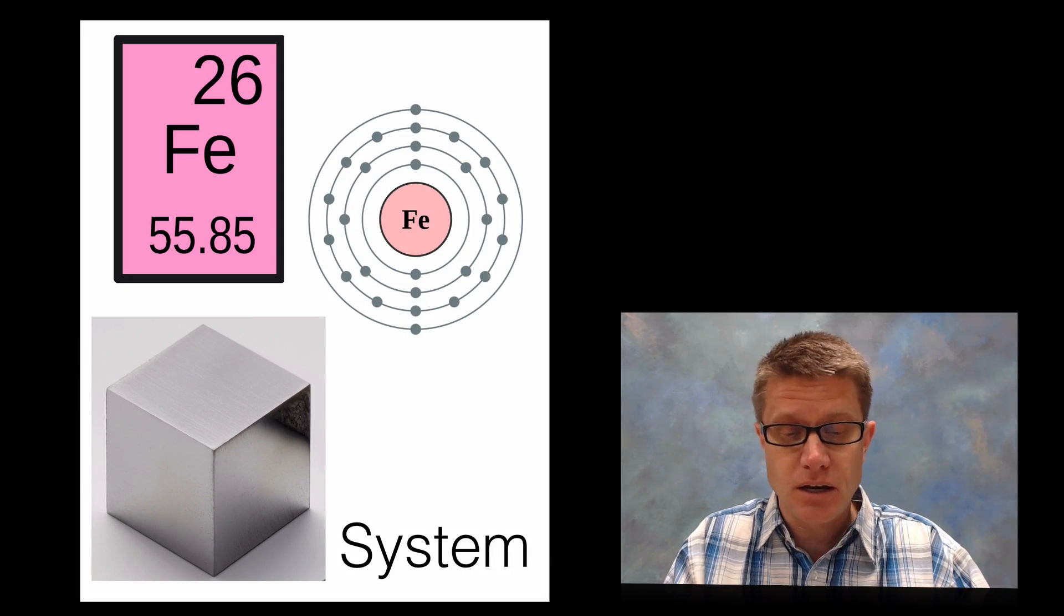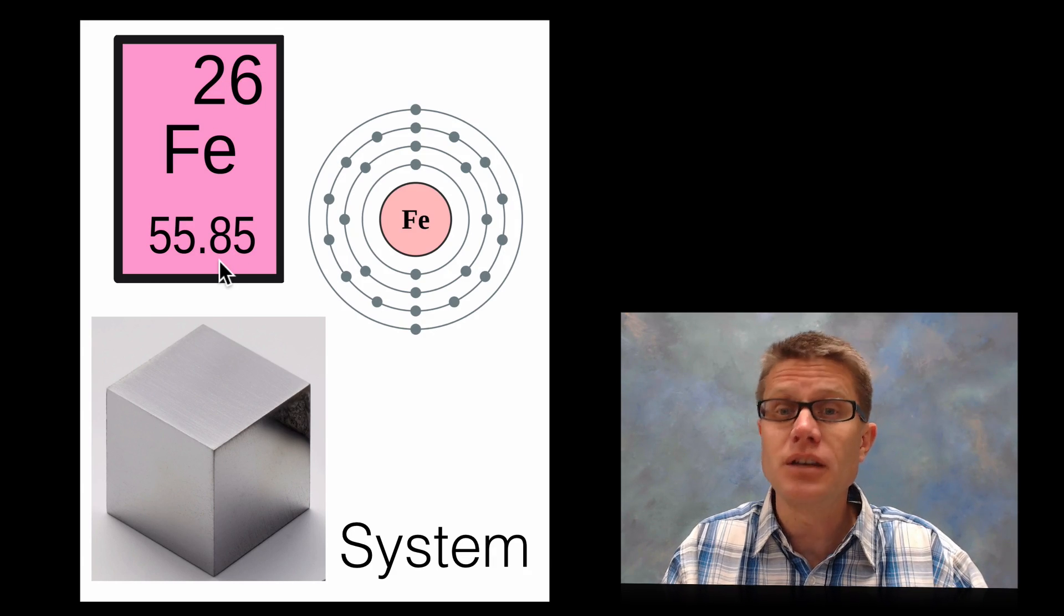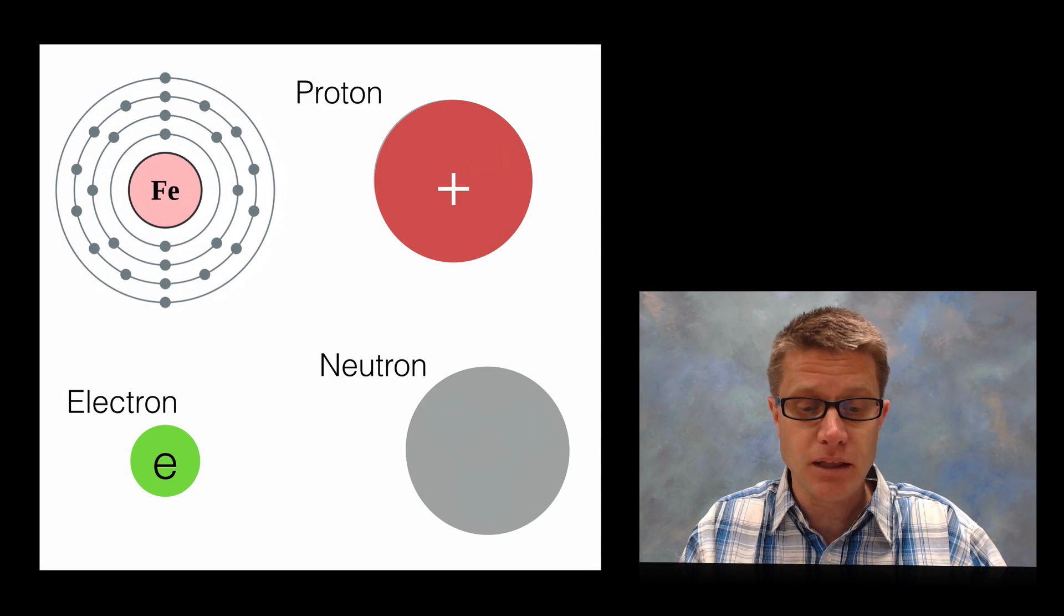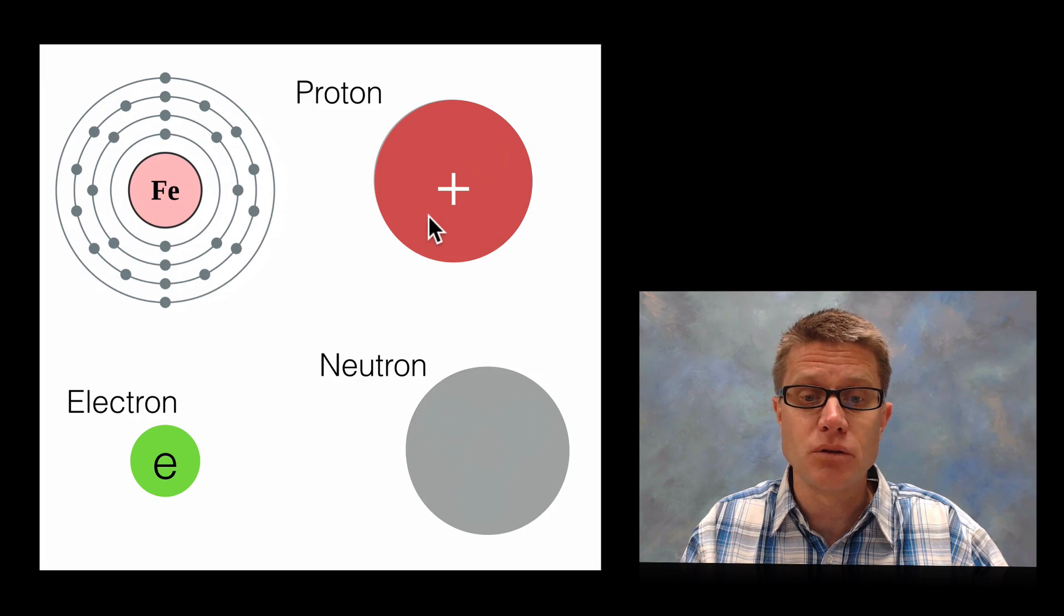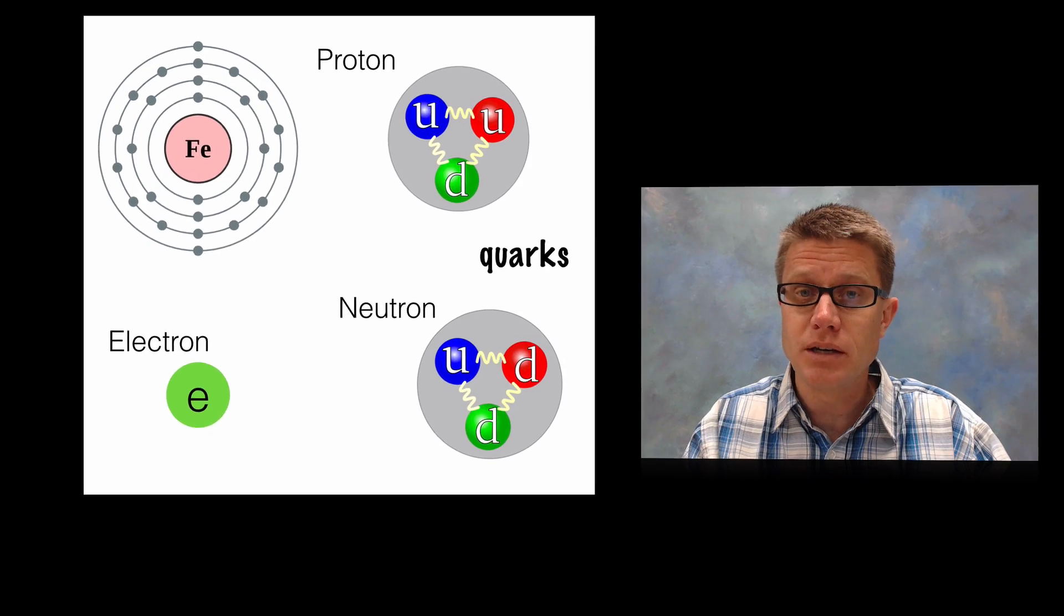We know that in a sample of iron there are going to be 26 protons. And then we are going to have about 30 neutrons in a typical nucleus. As we zoom into that we finally get our first fundamental particle, the electron. But we have to dig farther into the proton and the neutron to find the fundamental particles. Those quarks on the inside.